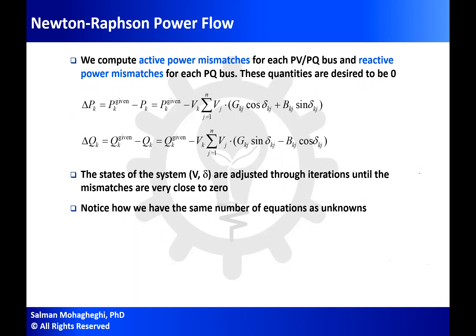Remember that in power flow, some buses are PV buses, some are PQ buses, and normally we have one slack bus. For the slack bus, I know voltage magnitude and phase angle. For PV buses, I know voltage magnitude and active power. For PQ buses, I know both active power and reactive power. So for PV buses, what is known is P — shown as P-given — and for PQ buses, I have both P-given and Q-given.